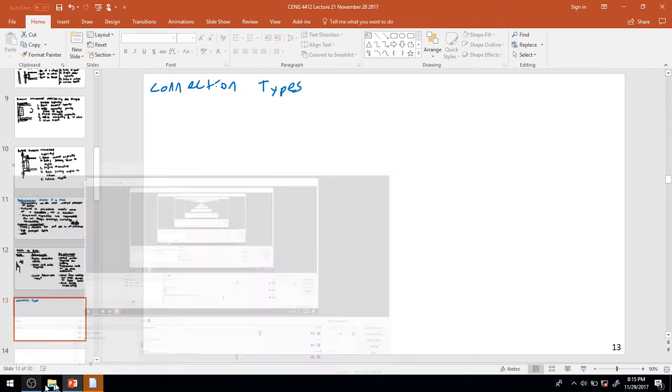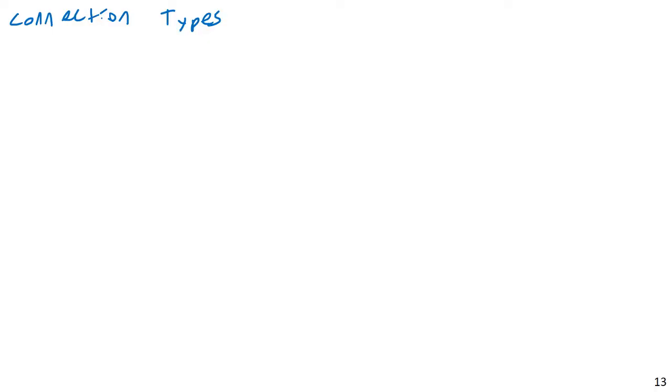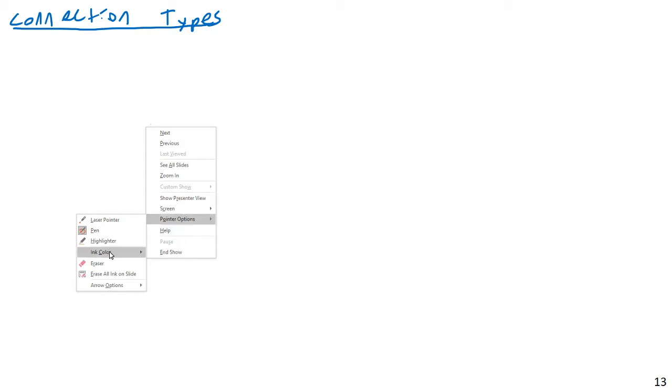Moving on, I'd like to describe some overall connection types. There are two main connection types we'll discuss here: simple and eccentric connections. It is important to be aware of these connection types.